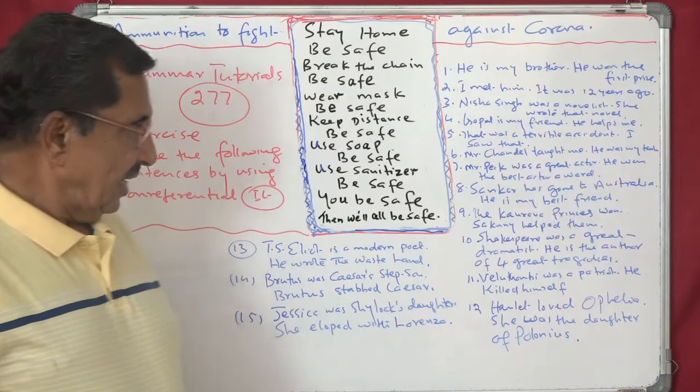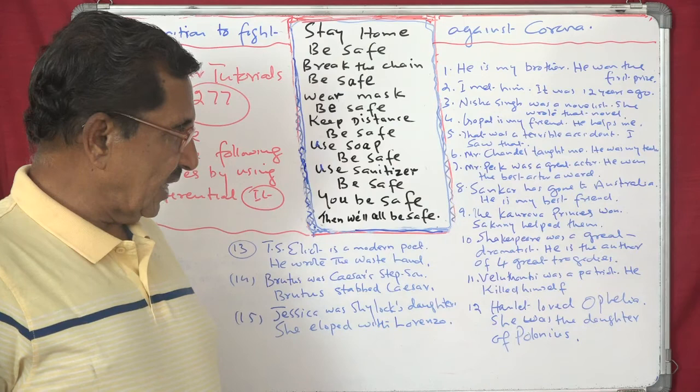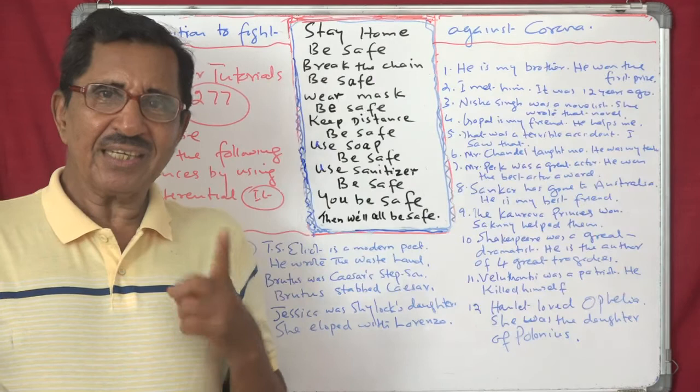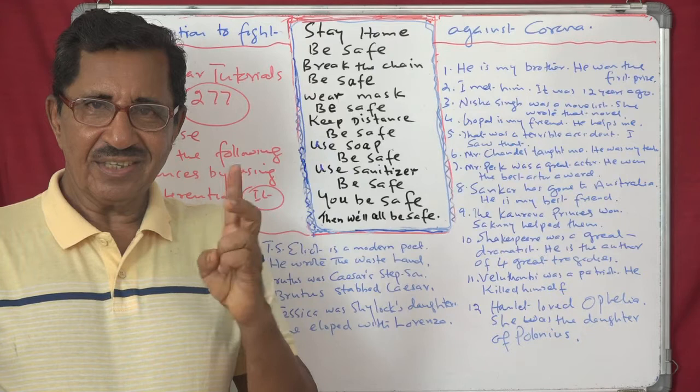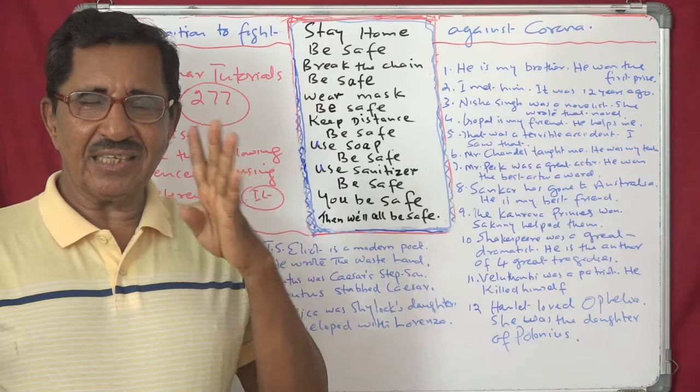Next — 'Shakespeare was a great dramatist. He is the author of four great tragedies.' Combined: 'It was Shakespeare, the great dramatist, who is the author of four great tragedies.' You know the four great tragedies? Hamlet, King Lear, Macbeth, and Othello — these are considered the four great tragedies of Shakespeare.